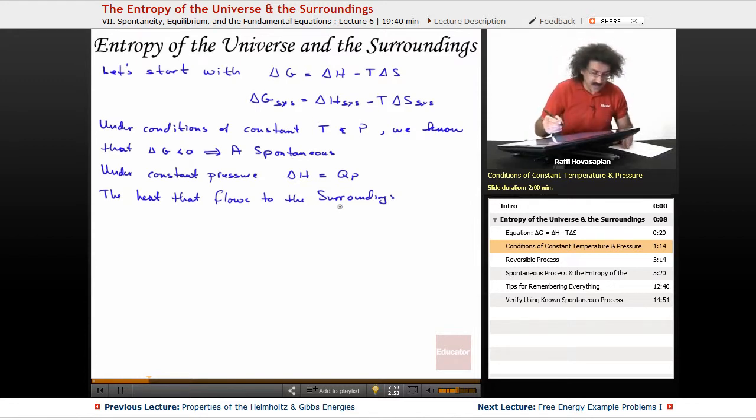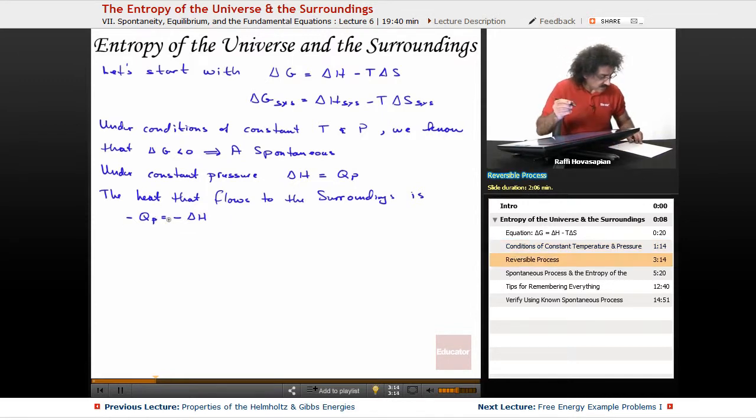So the heat that flows to the surroundings is just negative Q. Well that's equal to negative delta H, right? Because Q is delta H, so negative Q is negative delta H. That's the heat. So this is the delta H of the system. This is the heat that flows to the system. This is the heat that flows to the surroundings.